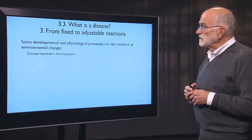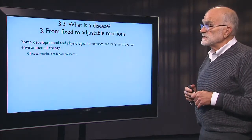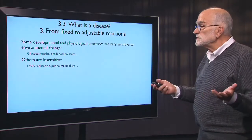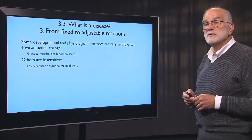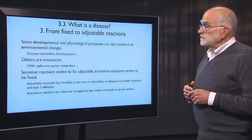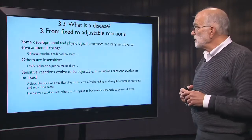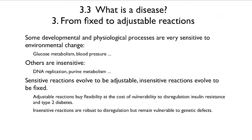Some developmental and physiological processes are very sensitive — for example glucose metabolism and blood pressure. Others are insensitive: DNA replication, purine metabolism. The sensitive reactions usually evolve to be adjustable to changes in the environment, and the insensitive reactions evolve to be fixed. The adjustable reactions are buying flexibility at the cost of vulnerability.